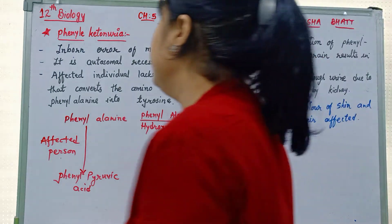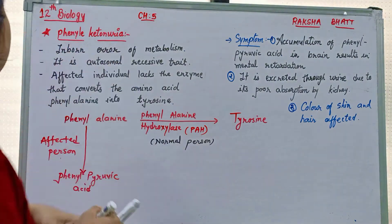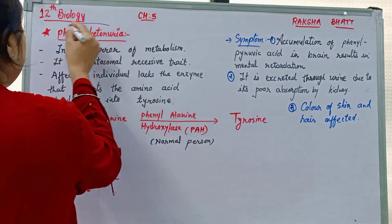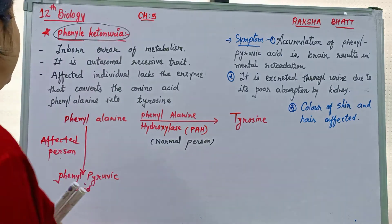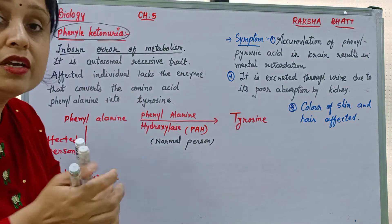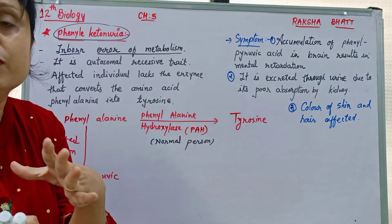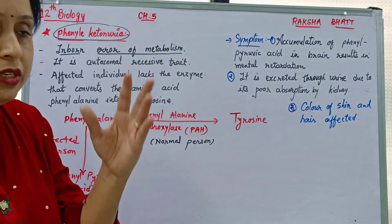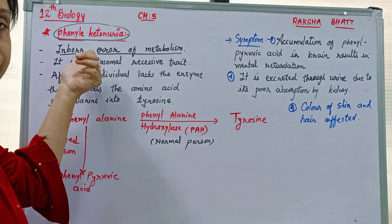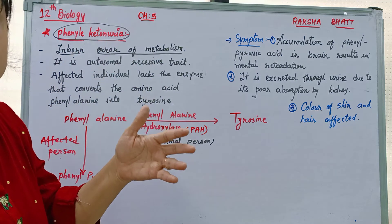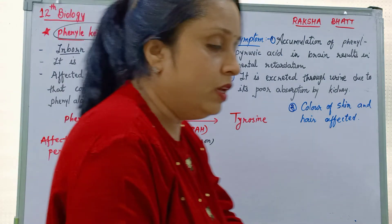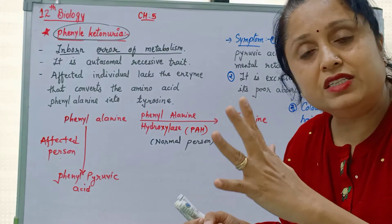Today I am going to discuss with you a most important theory: Phenylketonuria. What is this theory? It is an inborn error of metabolism. That means it is God-gifted. There is some problem occurring in enzyme production.